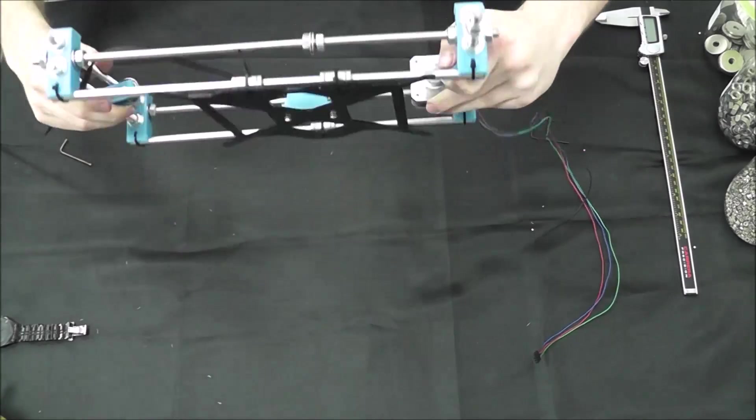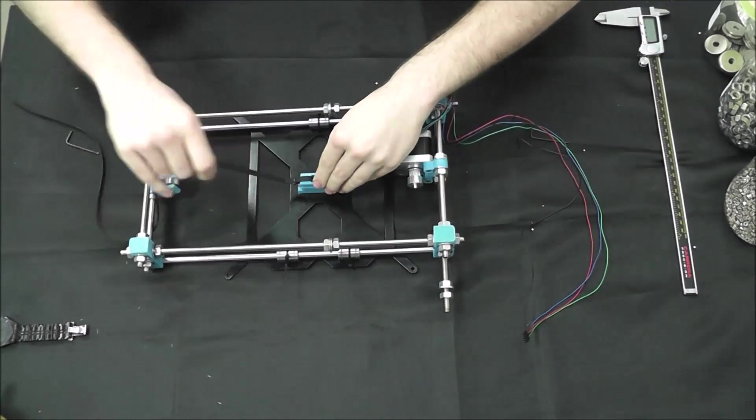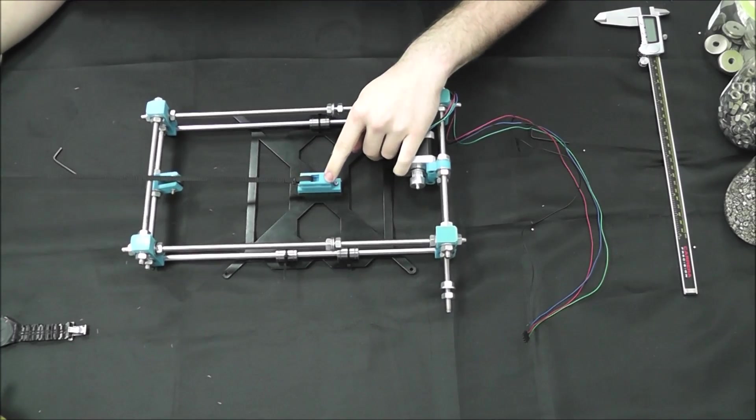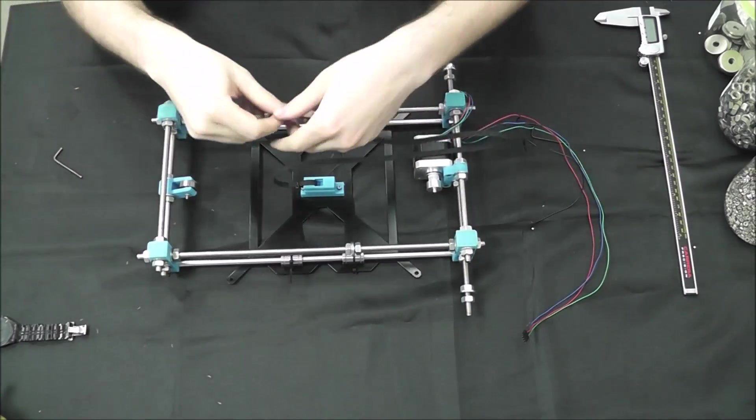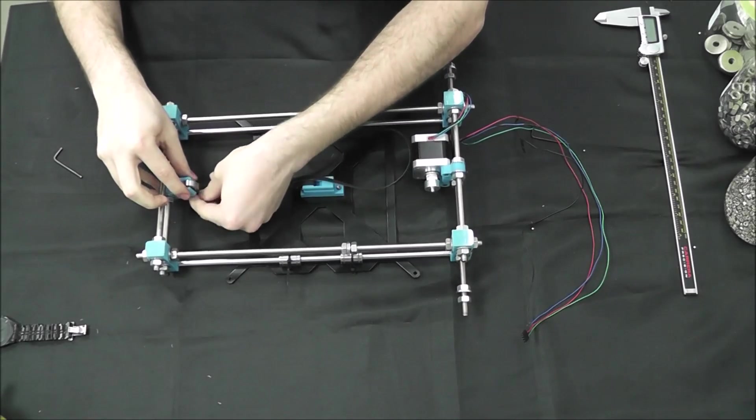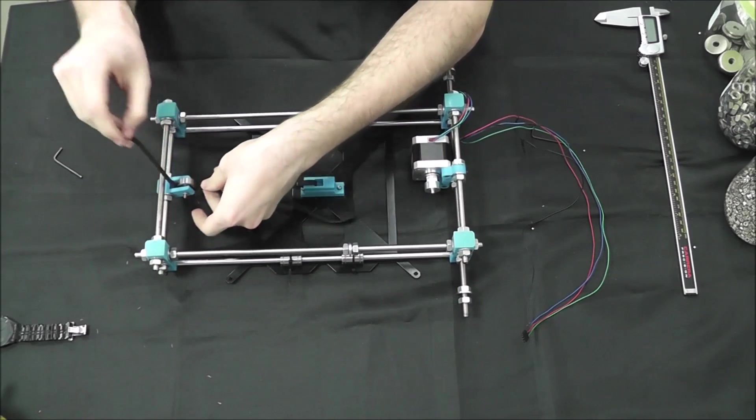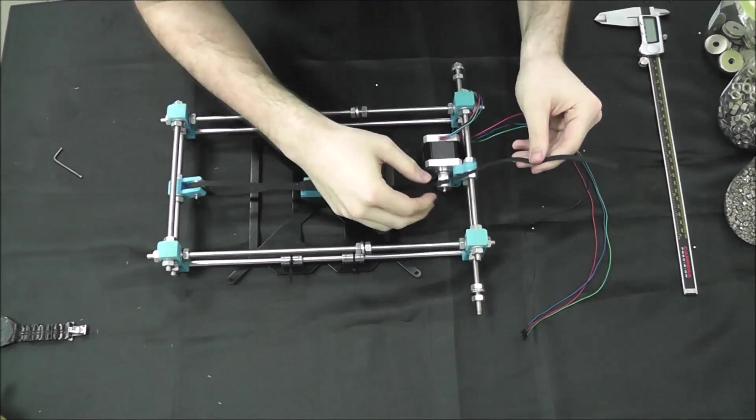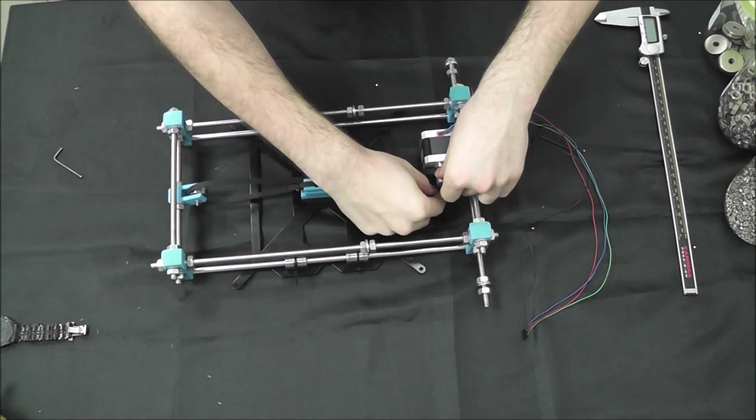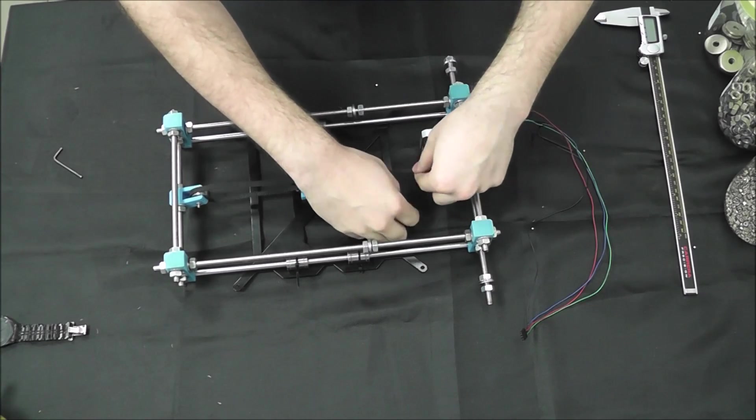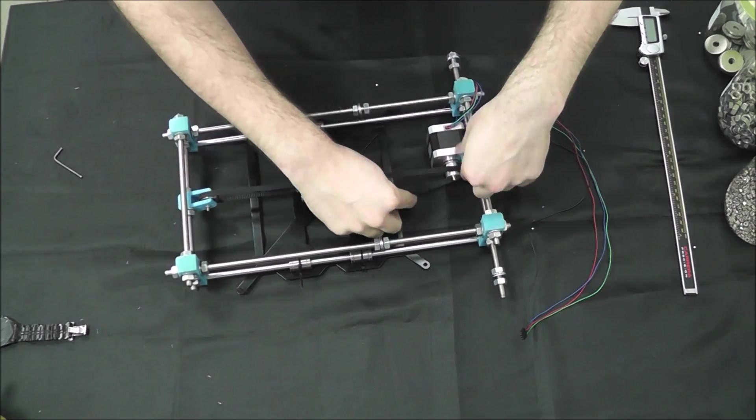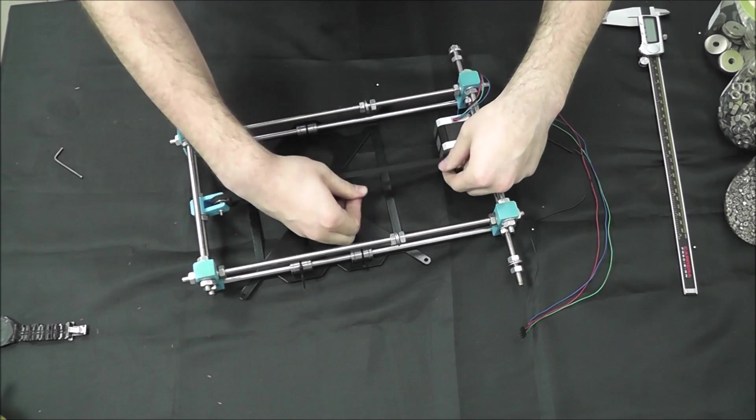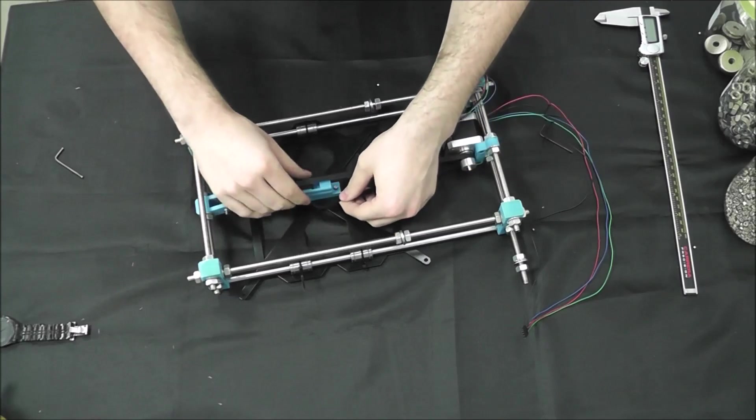Now we actually are going to flip it over and you see your loose portion of the belt here. Your teeth at this moment should be facing upwards and we're going to go ahead and slide it around our bearing. Teeth facing on the bearing. Pull it tightly around. Bring it over the pulley so that the teeth lock into the pulley there, like it's meant to.